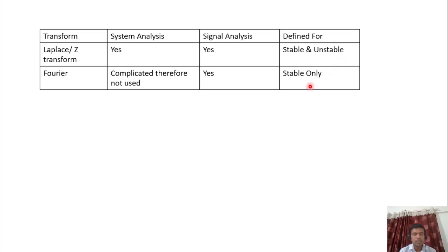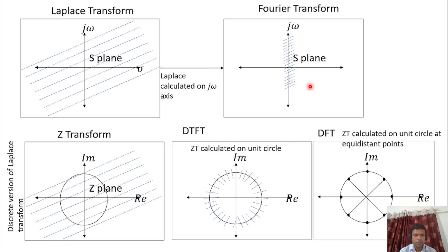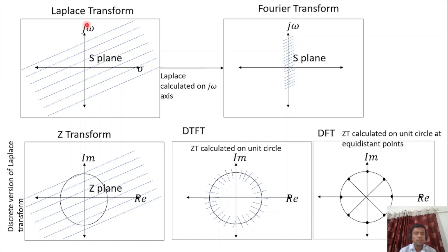Now we'll see the relationship between Laplace, Fourier, DTFT, and DFT. Laplace is calculated in the S-plane, where sigma is the real part and j-omega is the imaginary axis. When we calculate the Laplace transform on the j-omega axis, it becomes the Fourier transform. Laplace is defined for stable as well as unstable signals or systems.